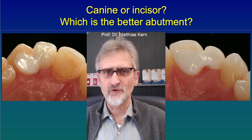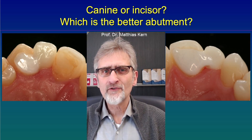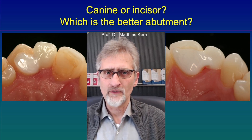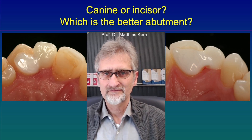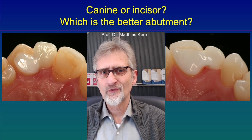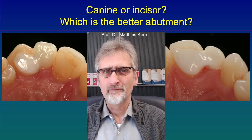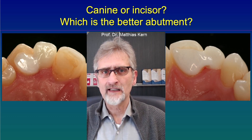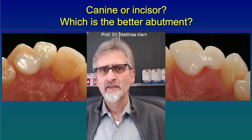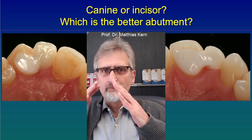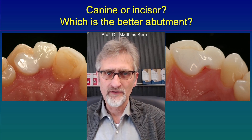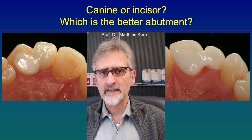What are the advantages? First, the bonding surface at the central incisor is much larger than at the canine, as you can see on the two images. In addition, the height of the proximal bonding area is larger at the central incisor because there is not the triangular shape of the canine. So we have a larger or higher connector height between the pontic and the retainer wing. That is the second advantage.